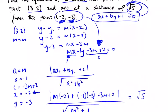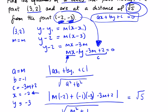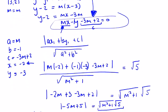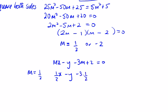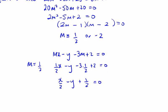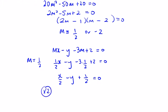Going back to our equation mx minus y minus 3m plus 2 equals 0. For m equals 1/2: we get (1/2)x minus y minus 3(1/2) plus 2 equals 0. Simplifying: x/2 minus y minus 3/2 plus 2 equals 0, which gives x/2 minus y plus 1/2 equals 0. Multiplying by 2: x minus 2y plus 1 equals 0.